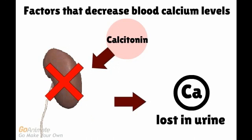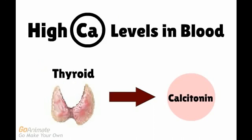Calcitonin also inhibits the reabsorption of calcium within the kidneys, meaning that more calcium is flushed out of the body through urine, thus lowering calcium levels within the bloodstream. So basically, when blood calcium levels are high, calcitonin is secreted, which signals for osteoclasts to be inhibited and for the reabsorption of calcium in the kidneys to be inhibited — thus blood calcium is decreased.